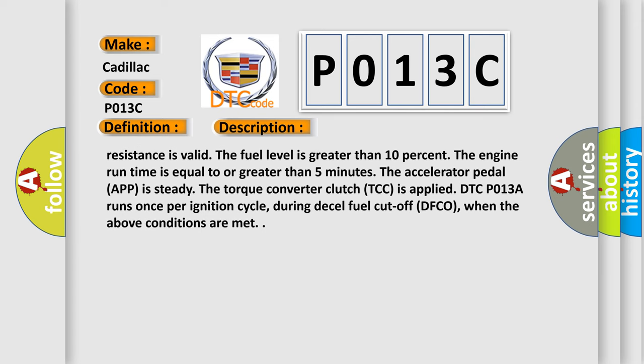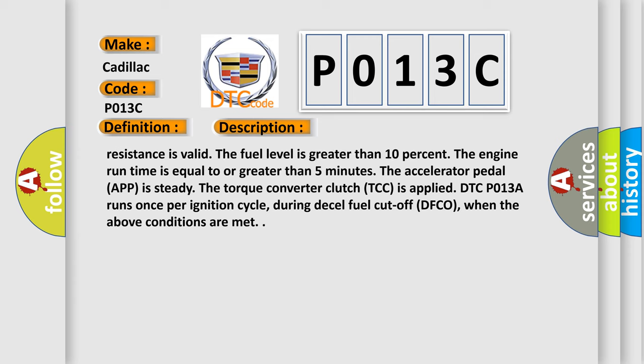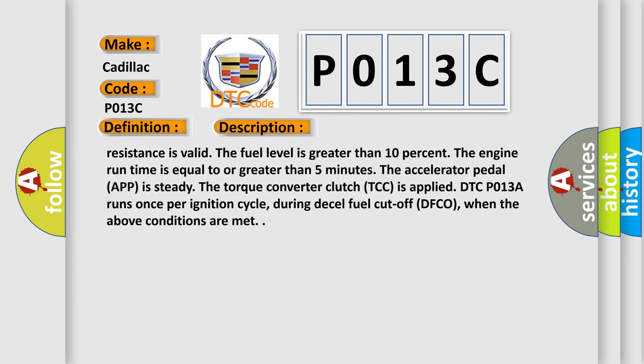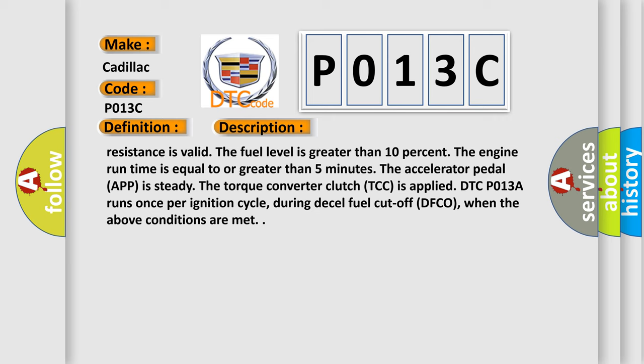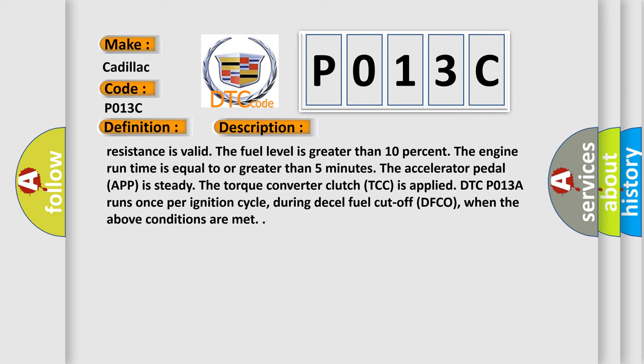The learned heater resistance is valid. The fuel level is greater than 10%. The engine run time is equal to or greater than 5 minutes. The accelerator pedal APP is steady. The torque converter clutch TCC is applied. DTC P013A runs once per ignition cycle during diesel fuel cutoff DFCO.